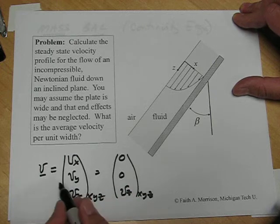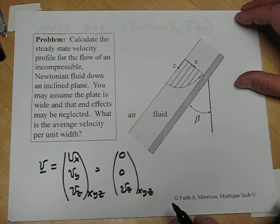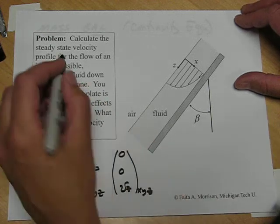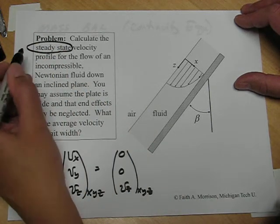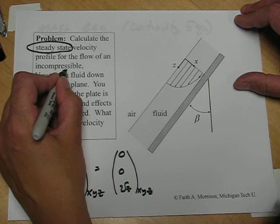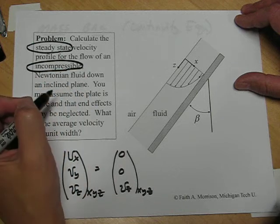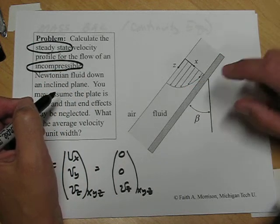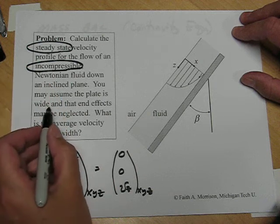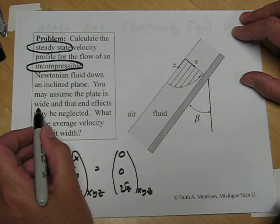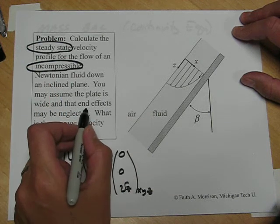So this is an important fact that we're going to use in simplifying the continuity equation. We're also going to use the fact that the flow is steady, that the fluid is incompressible, and later, when we simplify the Navier-Stokes equation, we'll use this fact that it's wide and that we're neglecting the end effects.